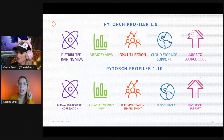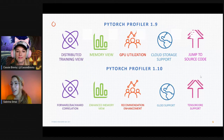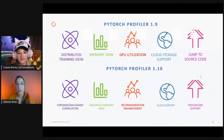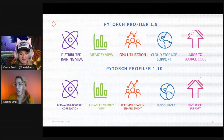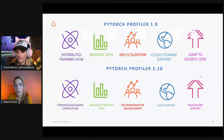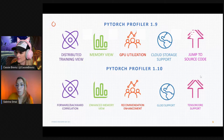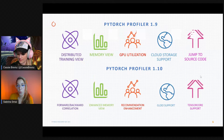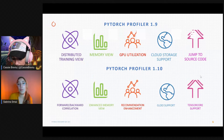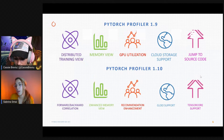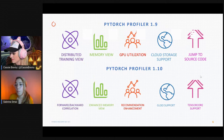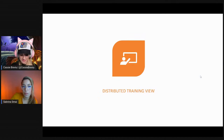The last feature in PyTorch Profiler version 1.9 is a pretty fun one — it allows you to visualize stack tracing information on TensorBoard, and when you click on a stack trace it will jump directly into the source code where the issue is. You can imagine how much this helps in terms of optimizing and quickly iterating through your code based on profiling results.